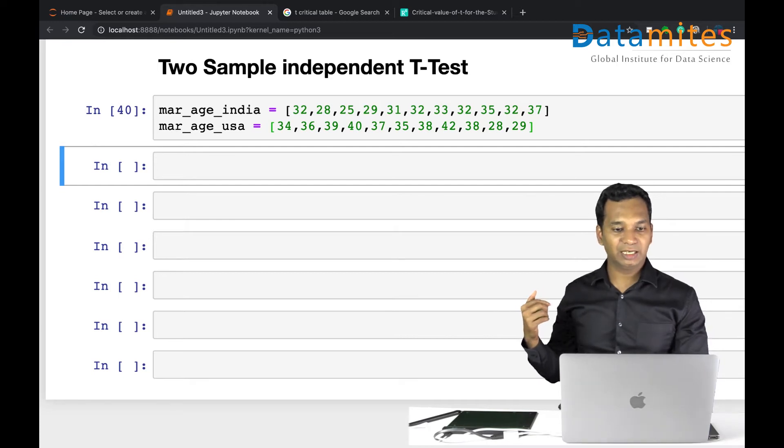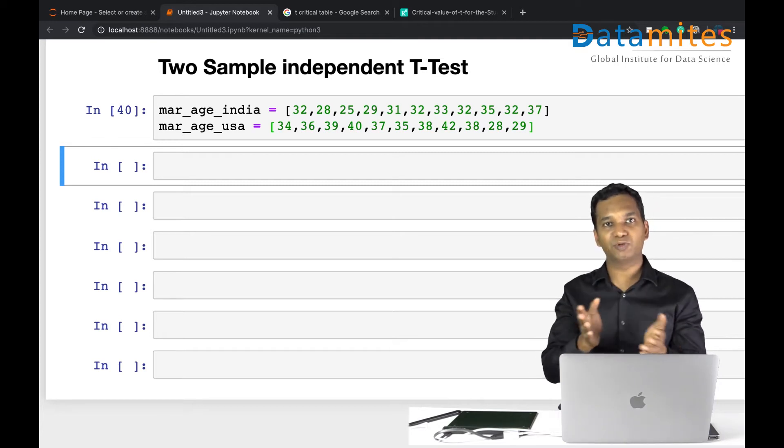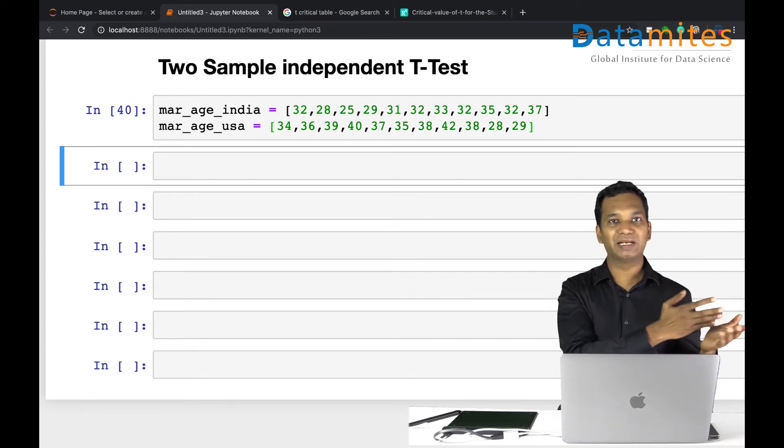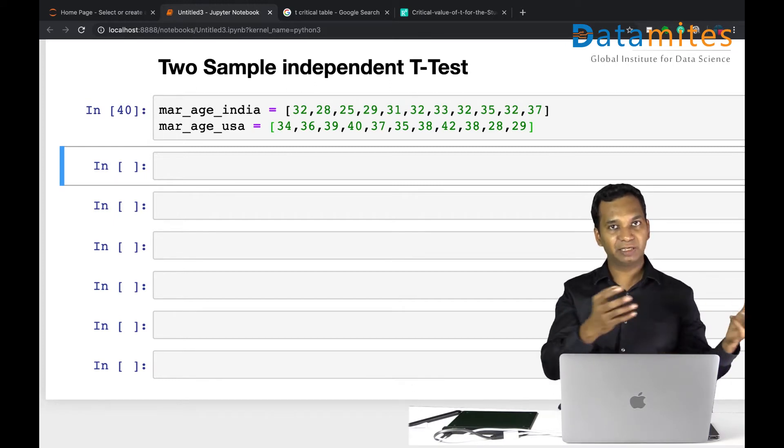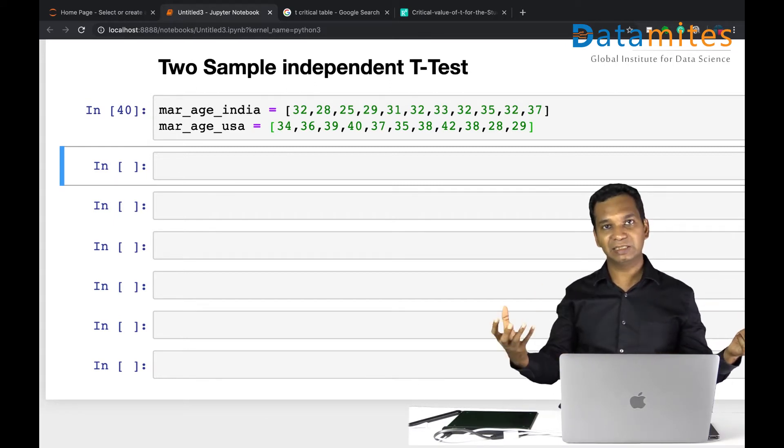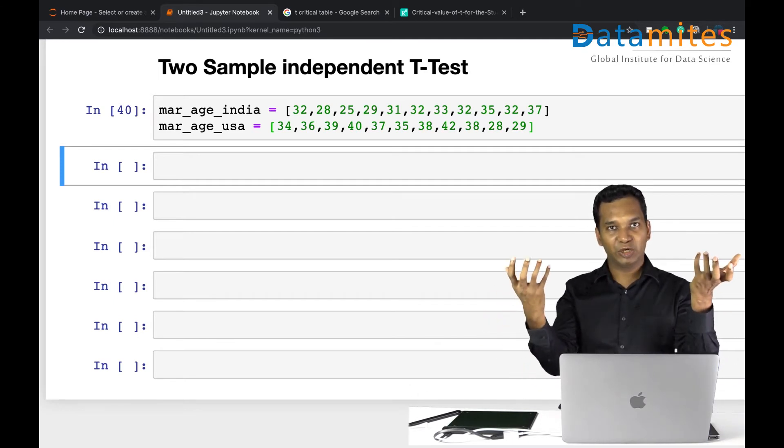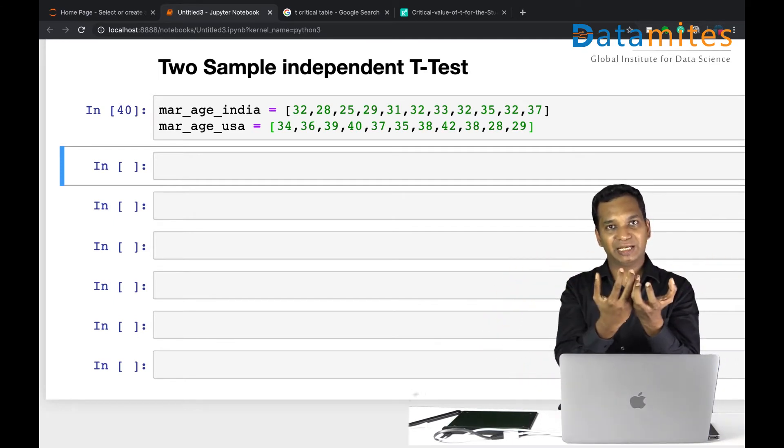We have some data for USA, America, and some for India. I'm going to run a two sample independent t-test. We call this independent t-test because these two samples have no dependency. The male people, the population of the US has no comparison or they're not related, so it's independent of each other. The people living in India and people living in America, they have no relation as such.